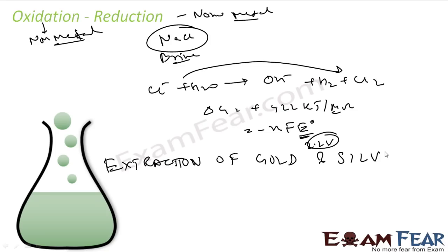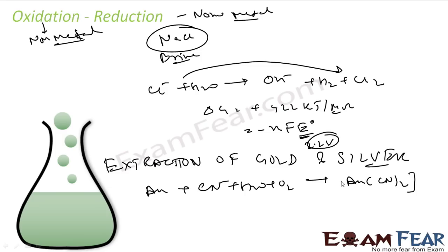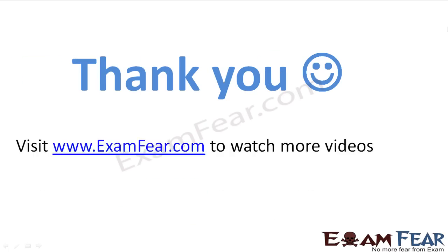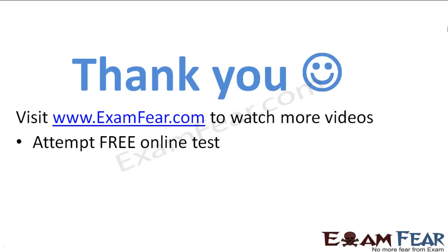This oxidation-reduction concept is also used for the extraction of gold and silver, as discussed in leaching. For gold, CN⁻ is used as the leaching agent in the presence of water and oxygen to form a complex compound. A reducing agent such as zinc is then used to reduce the complex and recover gold. Both oxidation and reduction are involved in this process.